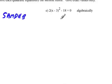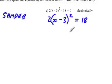So what we're going to do first is add 18 to both sides. So this is 2 times x minus 3 squared minus 18 plus 18, and so that would be 0. So this would be 0 plus 18 is 18.